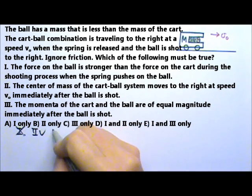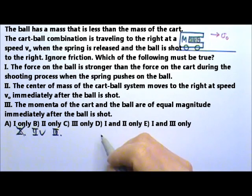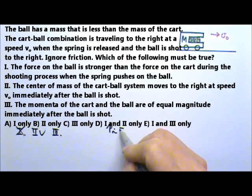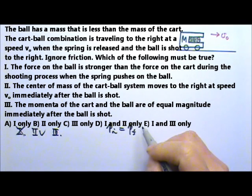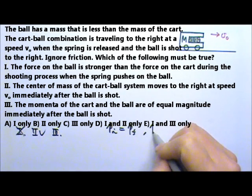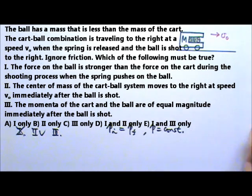For number three, we know that in this process, the total momentum of the system must be conserved. So the entire time the momentum has to be a constant. The initial momentum is M plus little m times v₀. Afterwards, the momentum should be the same as well.